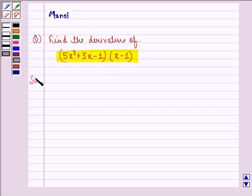Let us start with the solution to this question. First of all, let f(x) be equal to 5x³+3x-1 multiplied by x-1. Let us open the bracket first of all.